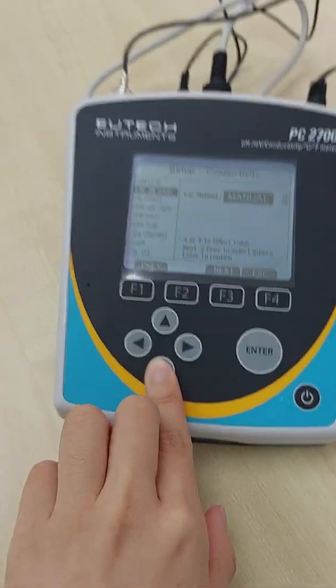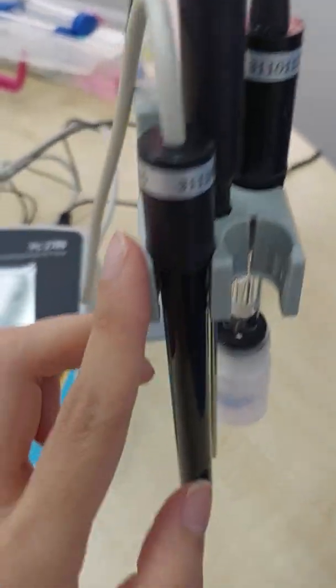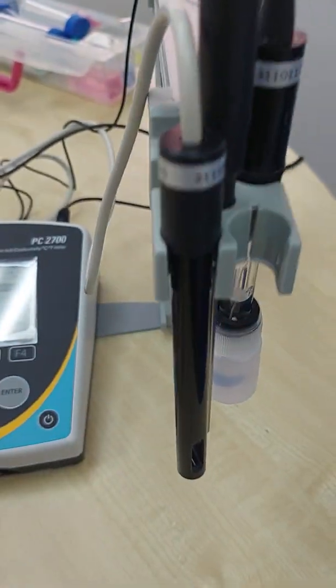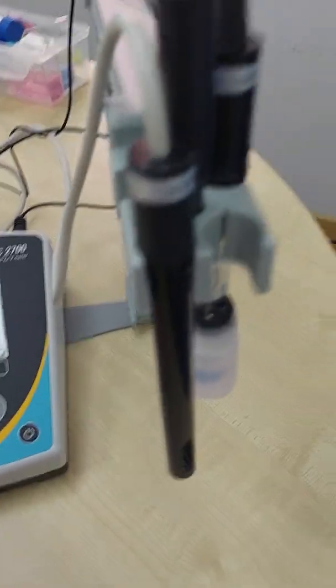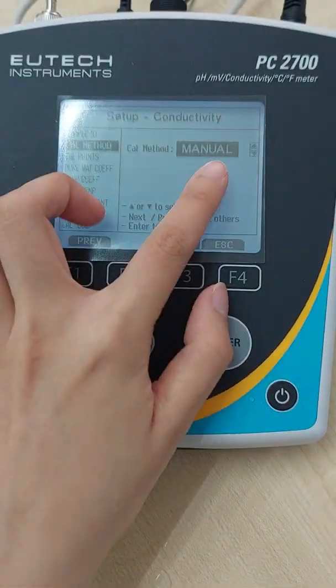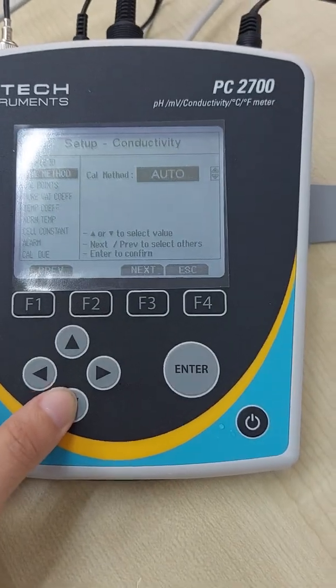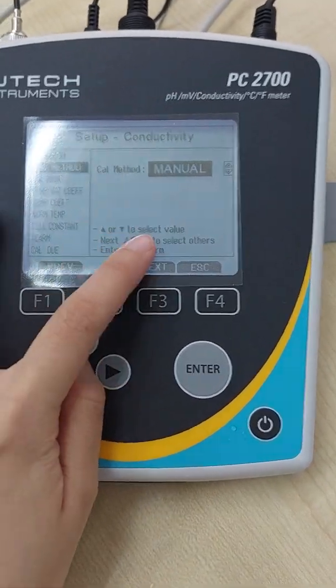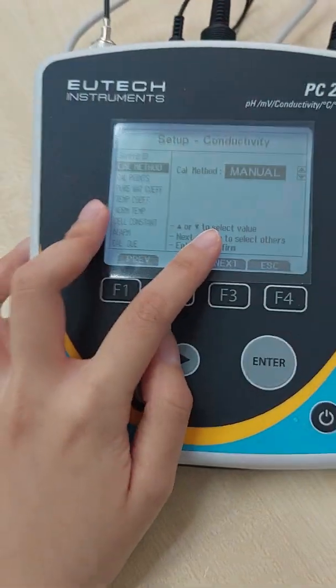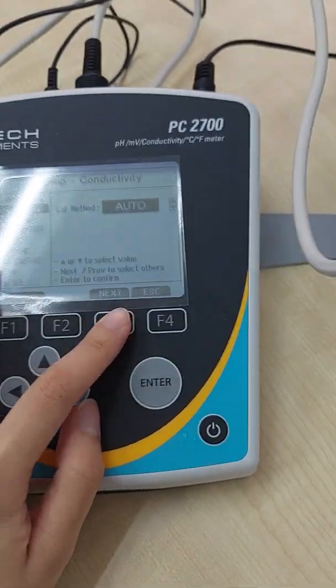If you set manual, once you immerse the probe into one four one three, you will need to manually adjust to one four one three. That only considers calibration done, manual calibration. So manual calibration, you will need to use it on TDS and salinity. Only conductivity has the automatic function.